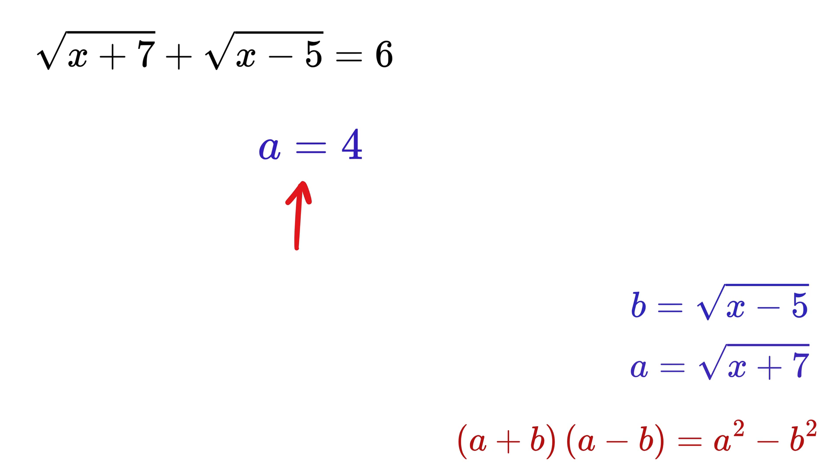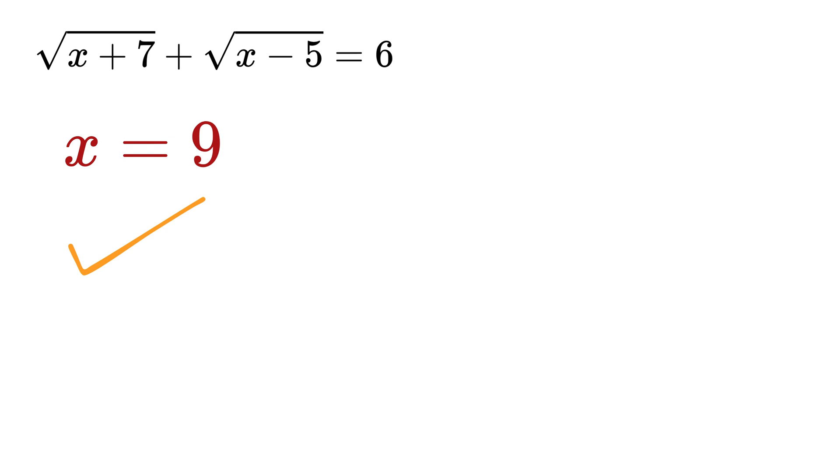Now a equals 4 means this equals 4. Square both sides to get x + 7 equals 4² or 16. Therefore x equals 9, and that's it. This is our final answer.